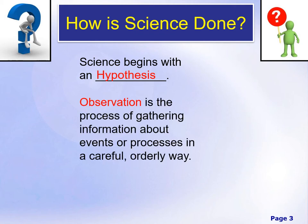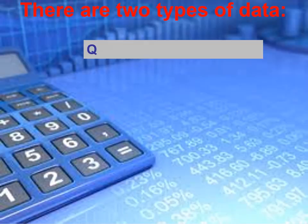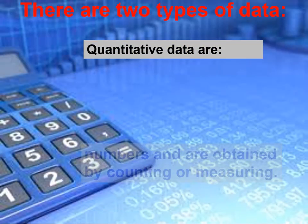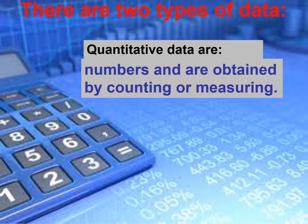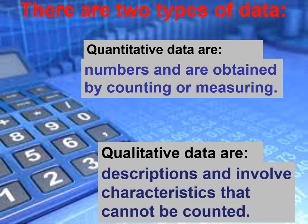Science begins with a hypothesis, which is based off of an observation — the process of gathering information about events or processes in a careful and orderly way. Data is the information gathered from making observations. There are two types of data: quantitative data, which is numbers obtained by counting or measuring — for example, measuring everyone's pinky finger and running the averages — and qualitative data, which involves descriptions and characteristics that cannot necessarily be counted.